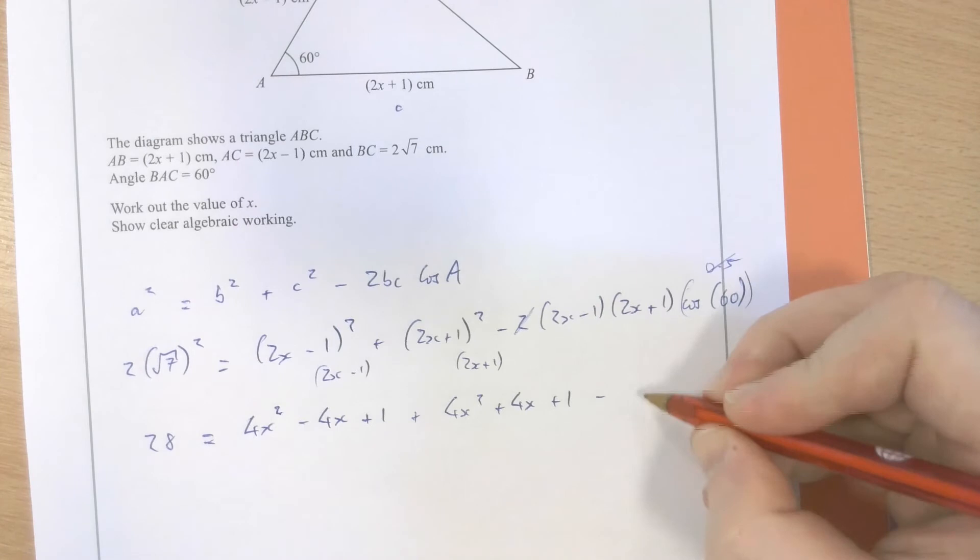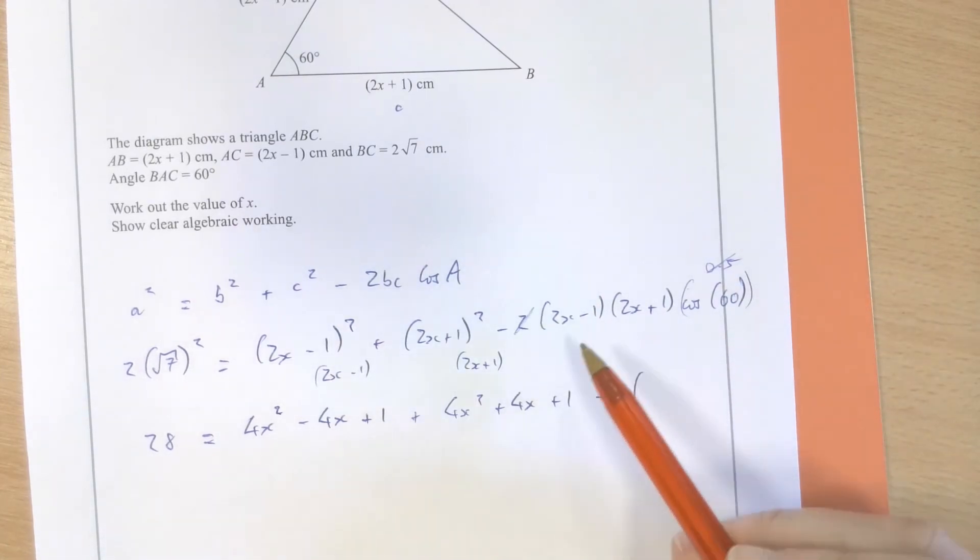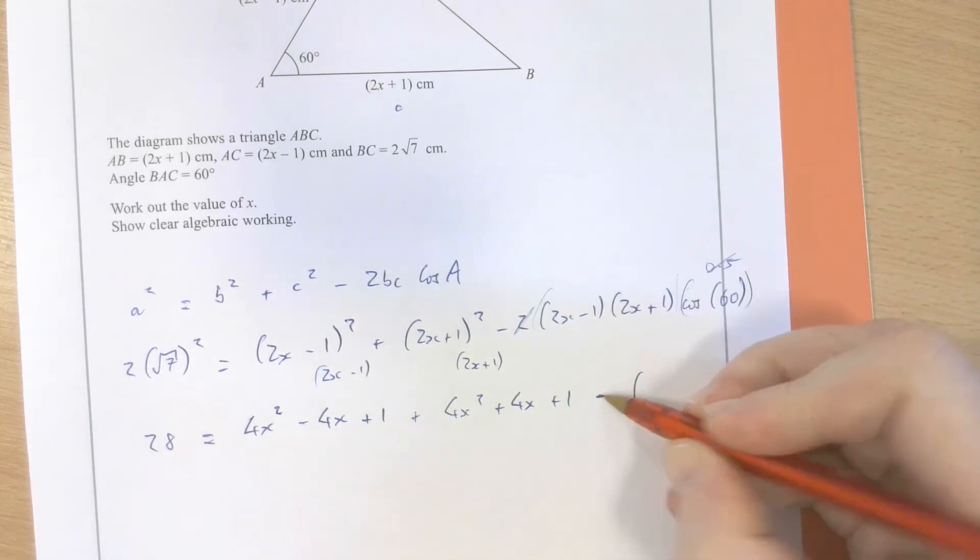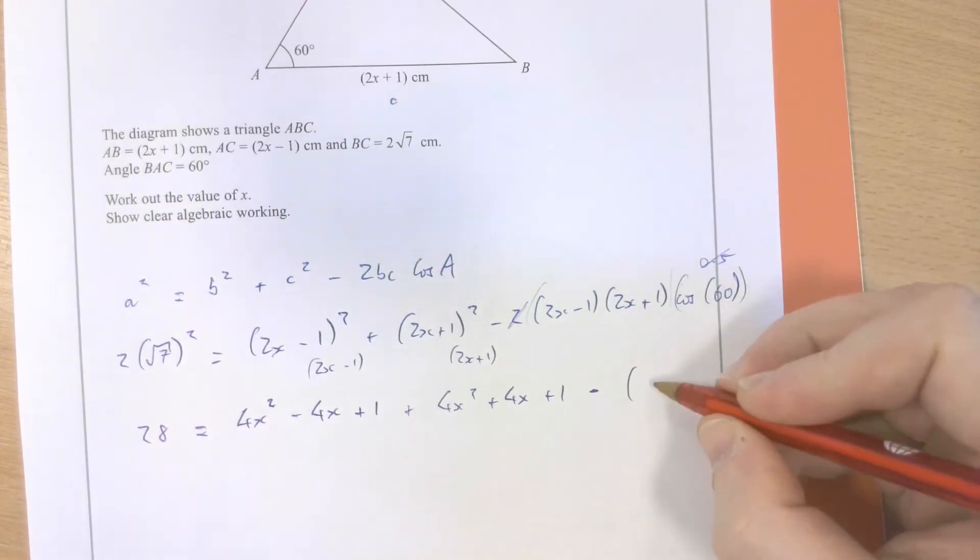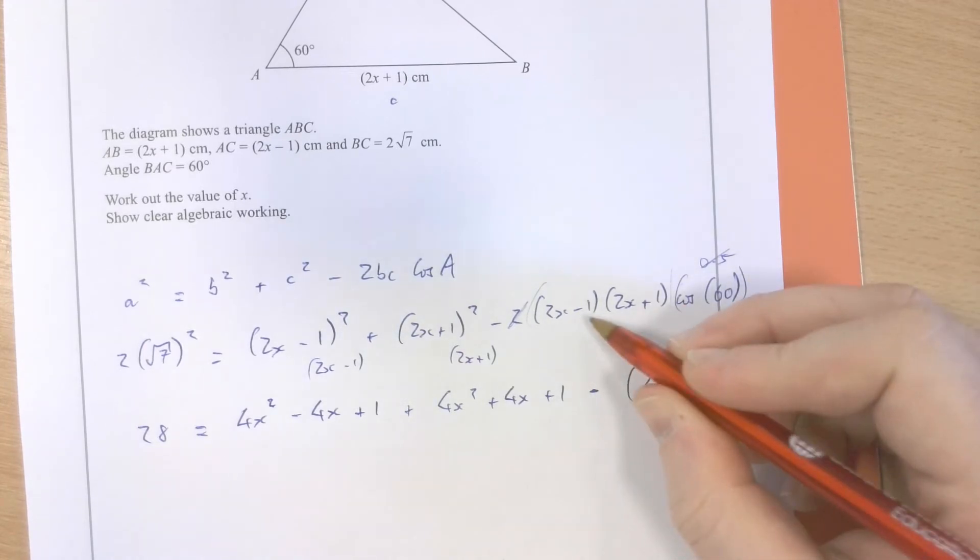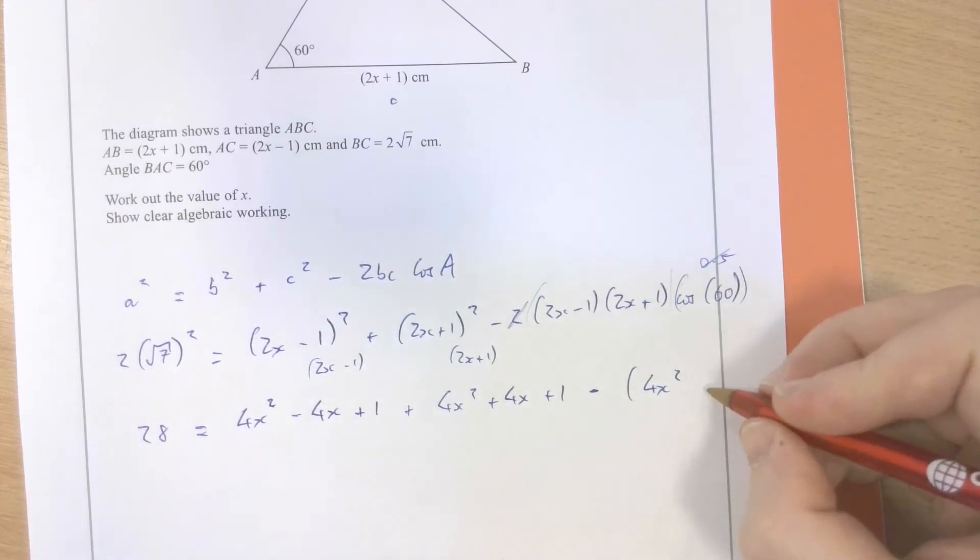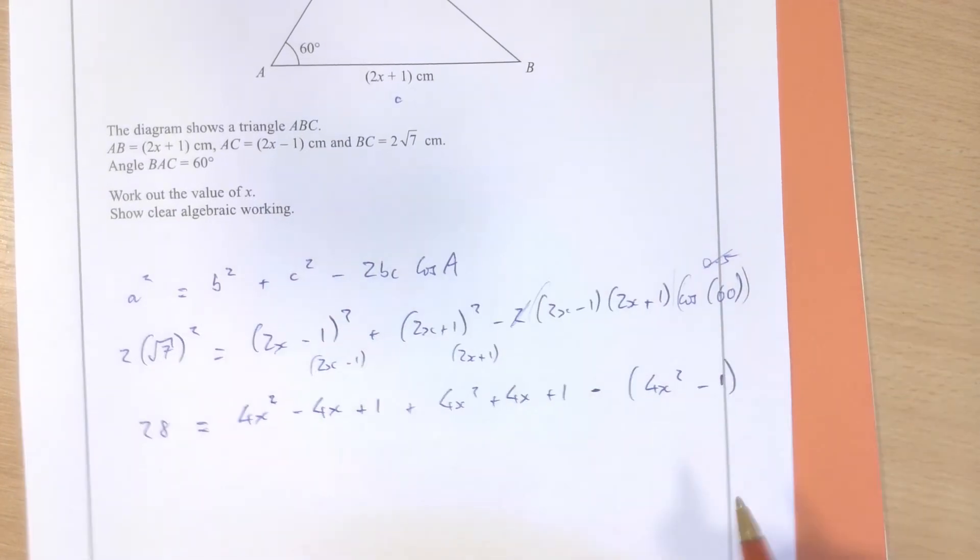That'll make minus, and I've got to be careful about this, all of this expansion, 2x minus 1, 2x plus 1, is being subtracted from what I've got in front of me here. So I'm going to leave that minus sign here and just put the expansion of this 2x minus 1, 2x plus 1 in this bracket. 4x squared plus 2x minus 2x, nothing, minus 1.